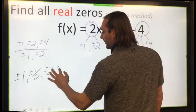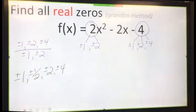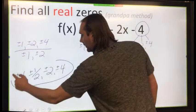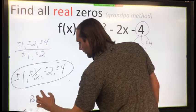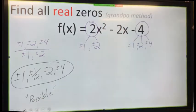Lastly, 4 divided by 1 is plus or minus 4, and 4 divided by 2 is 2, which I already have. So here are all of my possible zeros with this polynomial. Key word there is possible.